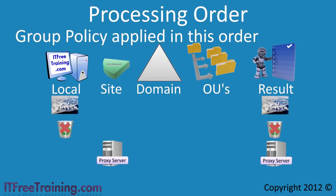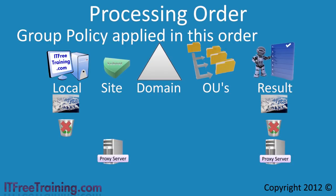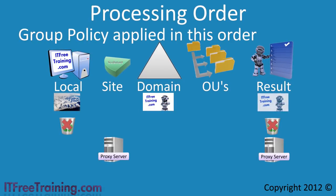When site-level group policy is applied, it will often be used for site-specific items like configuring proxy servers. If a domain group policy is added that sets the wallpaper while also disabling the control panel, the wallpaper applied by the local group policy will be overwritten by the group policy settings applied at the domain level. Disabling the control panel has also been added to the result. The proxy server configured at the site level still remains, as does removing the recycle bin from the local group policy.